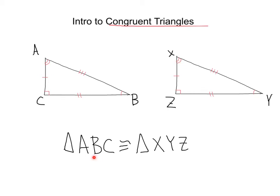Let's look at angle B, listed second, as it compares to angle Y. Here's B with one congruent mark, and here's Y with one congruent mark — so those are correct. And then C and Z correspond: C is a right angle and Z is also a right angle, so that is true as well.